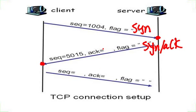The acknowledgement, as we've seen, is the sequence plus 1. So we take 1004 plus 1, which gives us 1005. Now the server's sequence is given here as 5015, and this sequence must be bigger than the client's sequence of 1004. So we have SEQ=1004 from the client and SEQ=5015 from the server — this is the SYN-ACK step of the three-way handshake protocol.